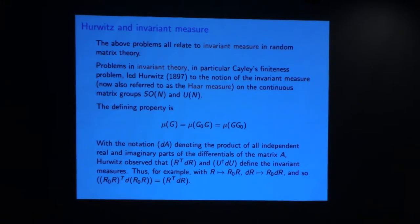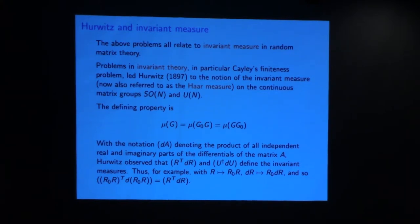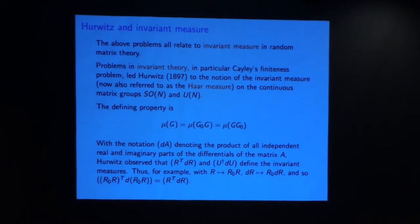The beginning due to Hurwitz goes right back to the days when invariant theory was of interest — following on from famous work of Hilbert on a finiteness problem relating to invariance of higher-order polynomials. Hurwitz was led to the notion of what Percy introduced as the Haar measure: the invariant left and right measure with respect to the group action. Hurwitz actually gave a specification of that in terms of the volume element. For orthogonal matrices, Hurwitz's specification is R-transpose dR, and one can verify left invariance: fixing R_0 and multiplying on the left leaves the volume form unchanged.